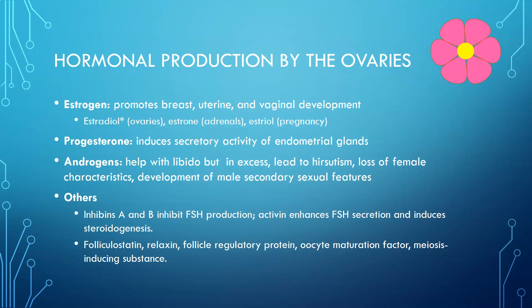Androgens produced by the ovaries can help with libido, but in excess they can lead to hirsutism — hair on the face, loss of female characteristics, and development of male secondary sexual features. Androgens include testosterone and DHEA; females do need a small amount of testosterone for adequate libido, energy, and wellbeing. Other hormones include inhibins A and B, which inhibit FSH production; activin, which enhances FSH secretion and induces steroidogenesis; and folliculostatin, relaxin, follicle regulatory protein, oocyte maturation factor, and meiosis-inducing substances.